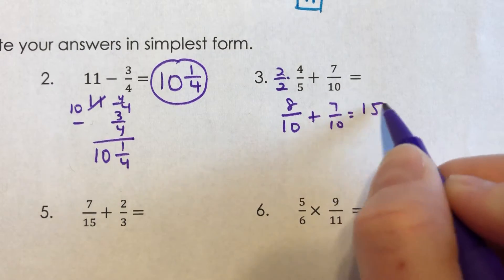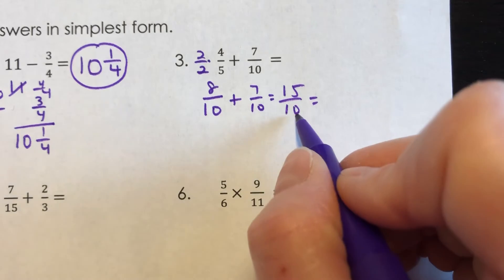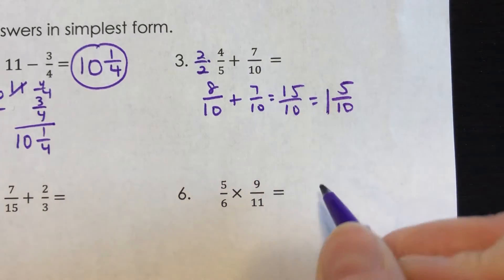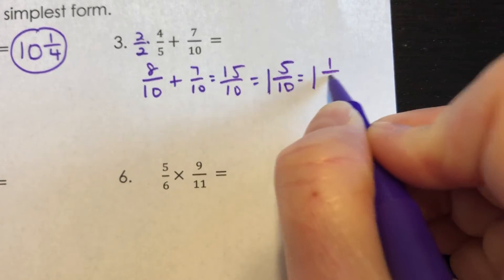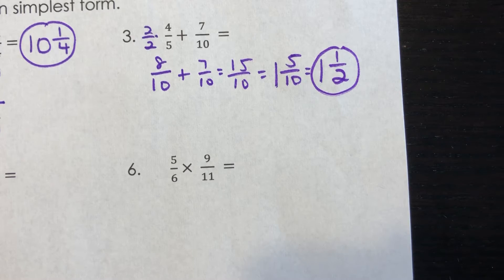Now this can be changed into a mixed number. 10 goes into 15 once and there's five left over out of 10. And yes, we know that five tenths is equal to one half. So you should have one and a half for your final answer for number three.